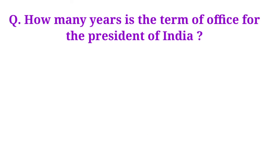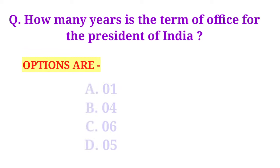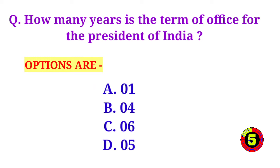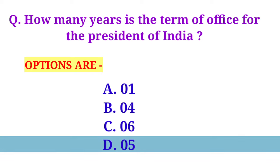How many years is the term of office for the president of India? Option D, 5 years, is the correct answer.